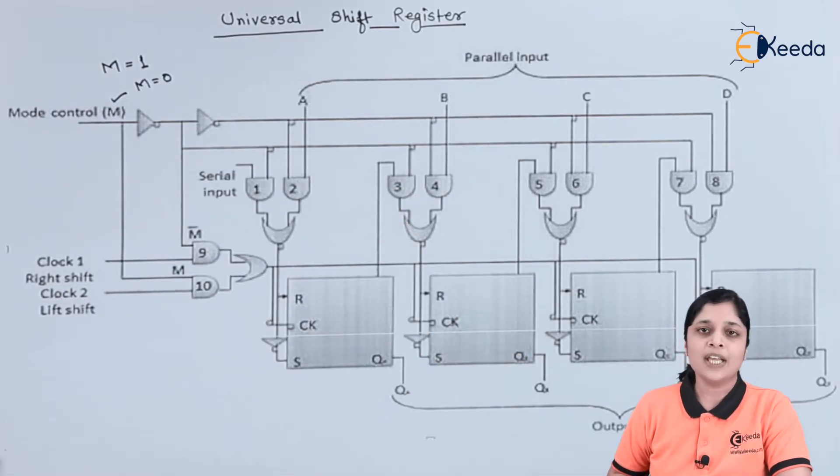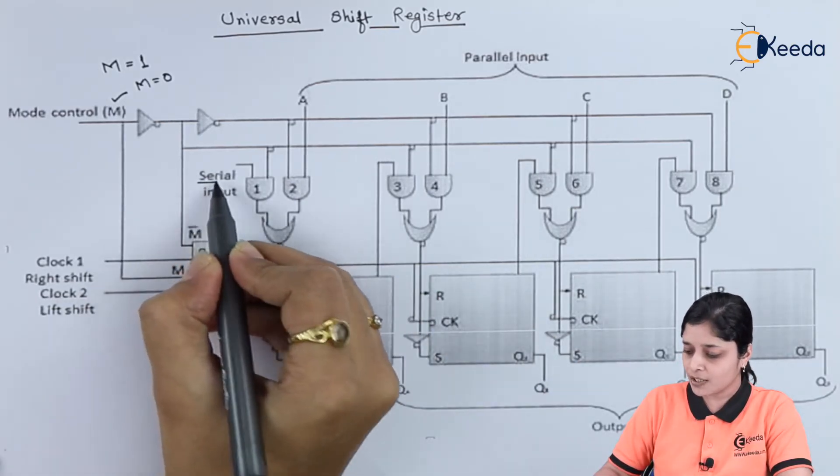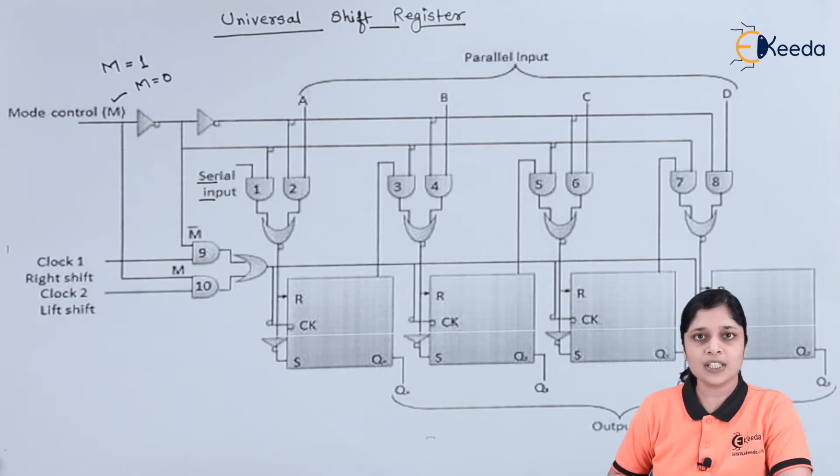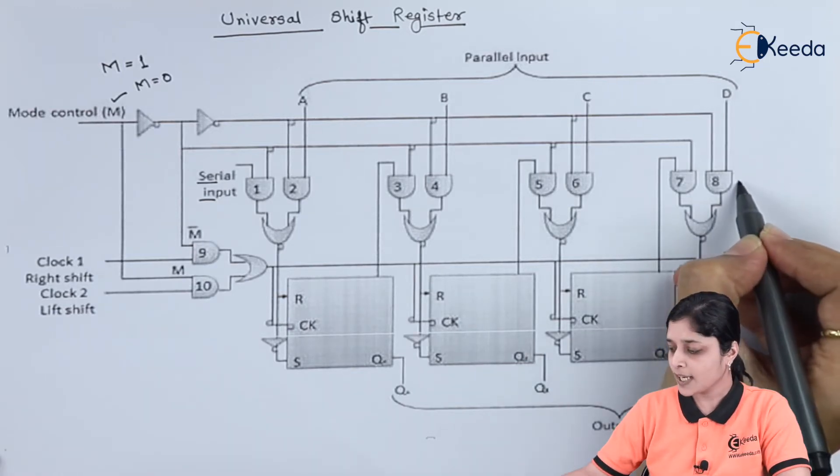In serial mode we have again two directions, that is right shift and left shift. Now here serial input is there, it is mentioned here. To shift the data towards left you have to give input to the AND gate one, and to shift the data towards right you have to give input to the AND gate D.